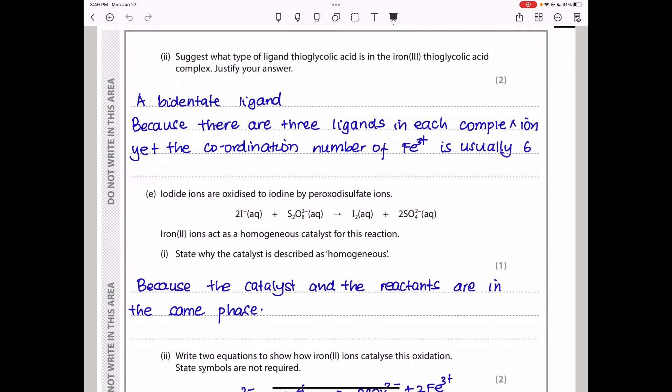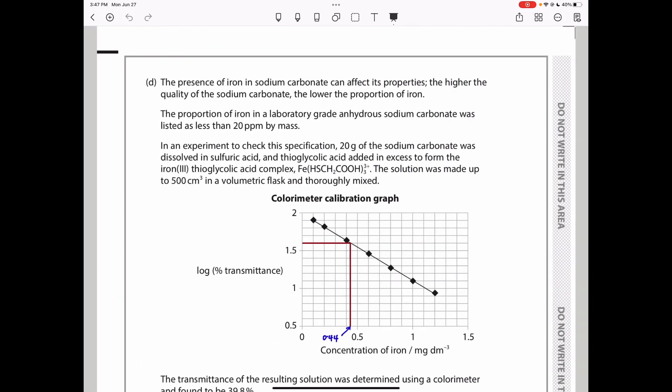Suggest what type of ligand thioglycolic acid is in the Fe3+ thioglycolic acid complex and justify your answer. I said it's a bidentate ligand. The reason for this is, in the introductory statement we read, they said that Fe3+ usually has coordination number 6. I'm referring to that to answer this. I said: because there are 3 ligands in each complex. If you refer back, it's going to be 3 ligands in each complex, yet the coordination number of Fe3+ is usually 6. You can see there are 3 ligands. However, we know that Fe3+ usually has coordination number 6. Because of that, we can conclude that this is going to be a bidentate ligand.